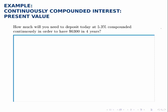Specifically, it asks how much will you need to deposit today at 5.3% compounded continuously in order to have $6,300 in four years. So we are still using the continuous compound interest formula,